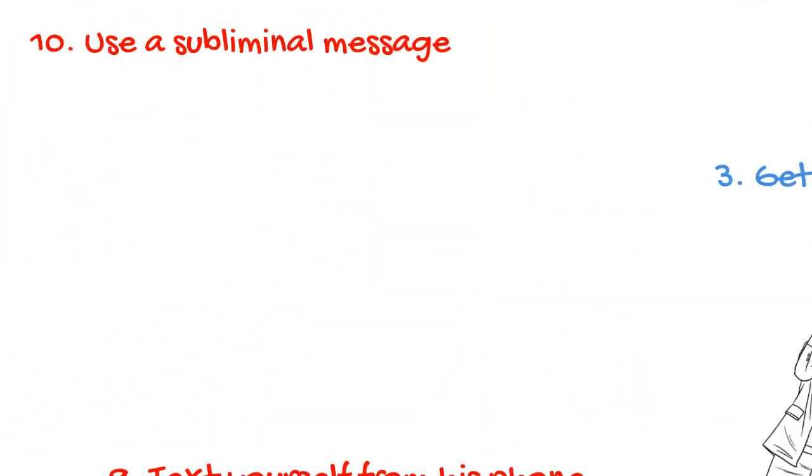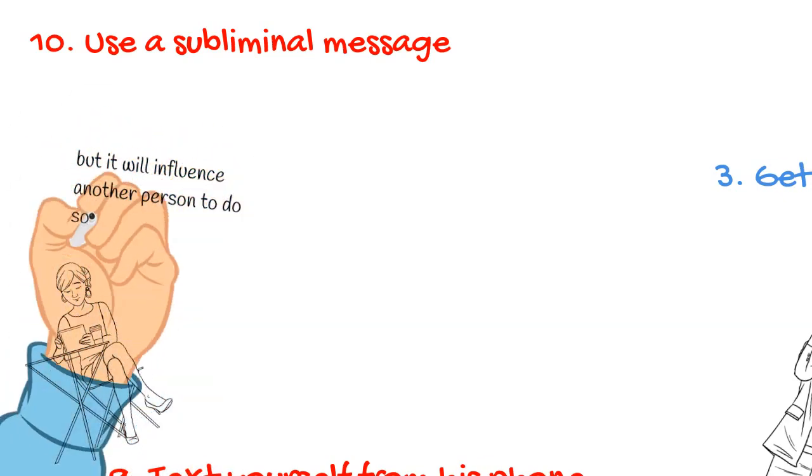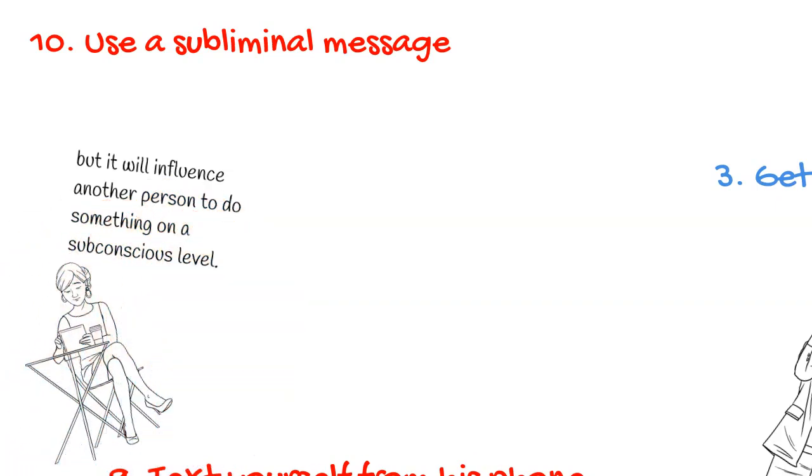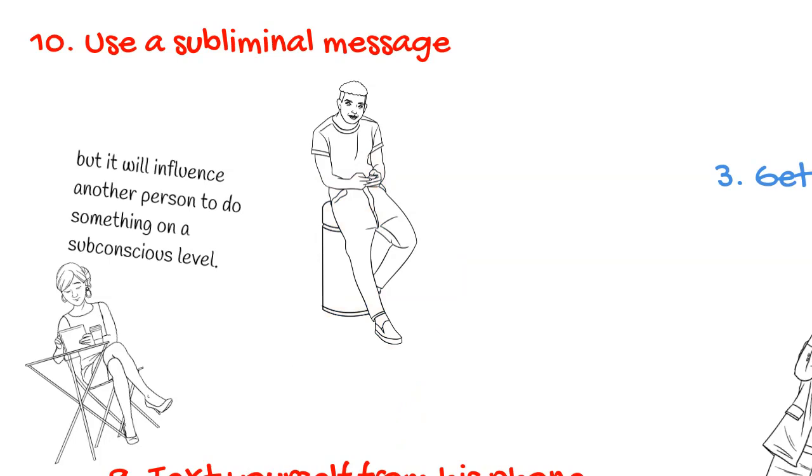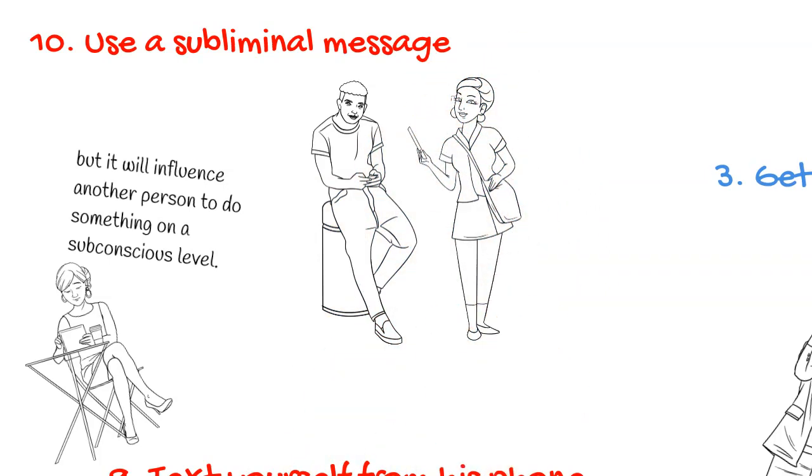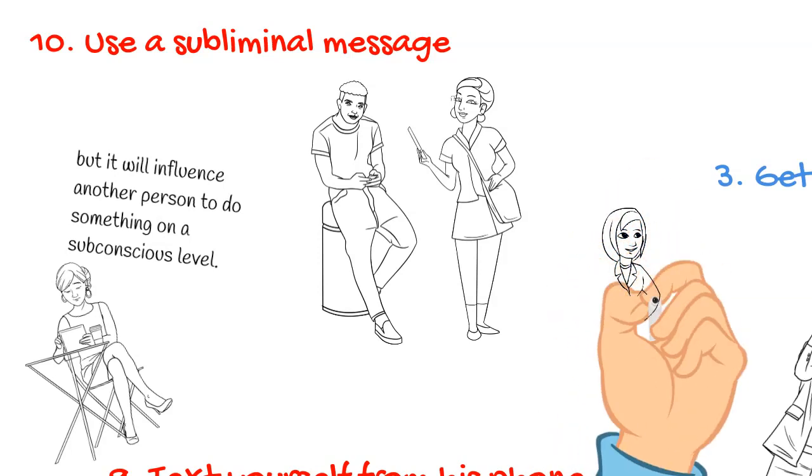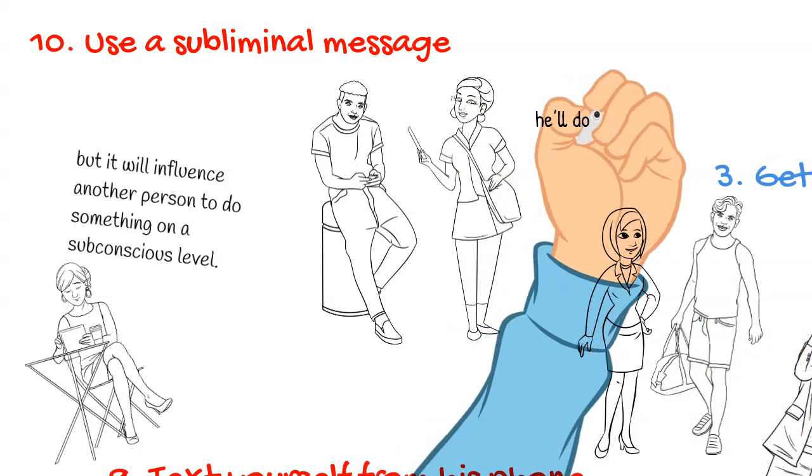Ten: use a subliminal message. In case you're not familiar with the term, a subliminal message means doing something that is not easily perceived but will influence another person to do something on a subconscious level. In this case, it means holding your phone in your hand while talking to him, which will remind him to ask you for your number. You can improve your performance by talking about your future plans, which will remind him that he needs to stay in touch with you.